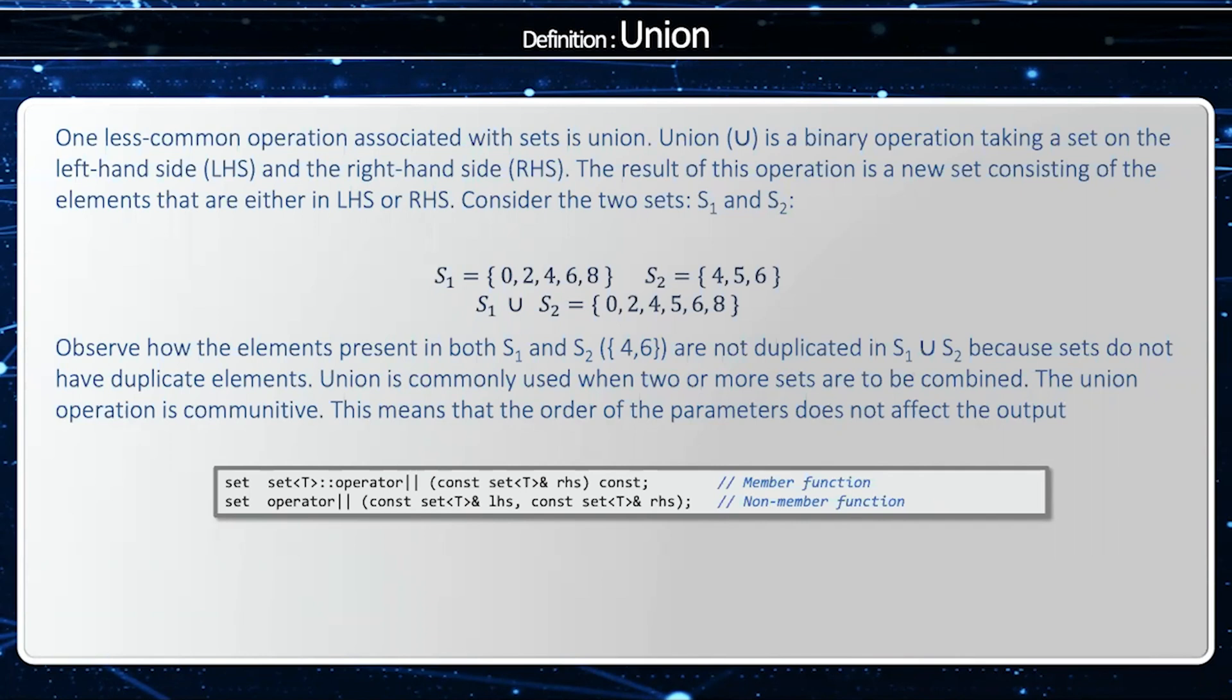For an example, S1 union S2 will be everything in the left-hand side, 0, 2, 4, 6, 8, as well as everything on the right-hand, 4, 5, 6. Notice only 5 is in set 2 but not in set 1. So S1 union S2 would be 0, 2, 4, 5 from S2, 6, 8.